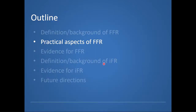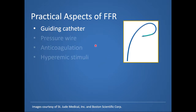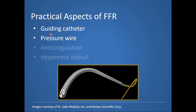Let's now get into some practical aspects of FFR. Whenever performing FFR, we need a guiding catheter. We prefer a guiding catheter over a diagnostic catheter because of the larger internal lumen, which allows the aortic pressure measurement as well as the coronary distal pressure to be more accurately assessed. We also need to think about the pressure wire. There are many different pressure wires now available — shown here is an example of Pressure Wire X, with the radio-opaque part of the wire and the pressure sensor at the transition between the radio-opaque portion and the less visible part of the wire.